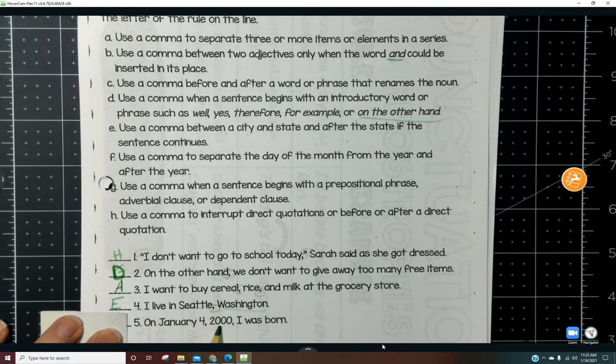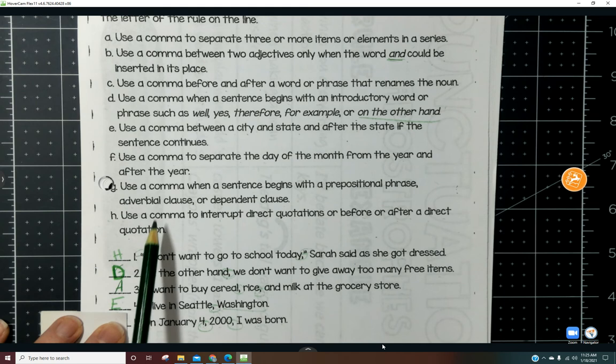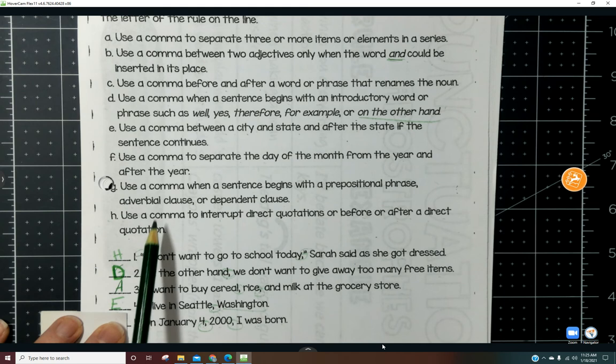Number five: 'On January 4, 2000.' So we have a comma after the day and after the year. So that's here for F. Hopefully you got all of those correct. We'll continue practicing throughout the year. Okay.